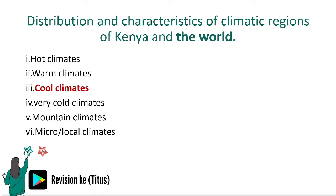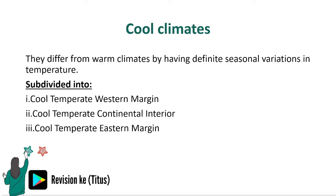Moving forward to the cool climates, which differ from the warm climates by having definite seasonal variations in temperature. They are subdivided into the cool temperate western margin, the cool temperate continental interior, and the cool temperate eastern margin.